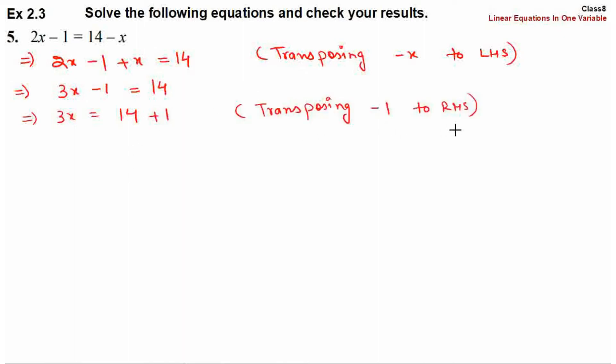Transposing minus 1 to the right hand side. So 3x equals 14 plus 1, which is 15.